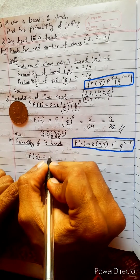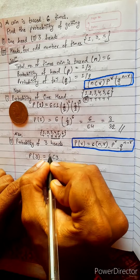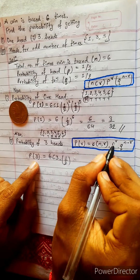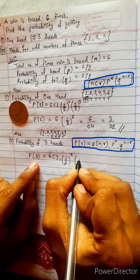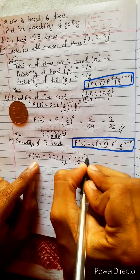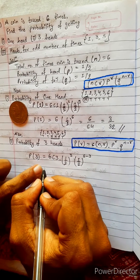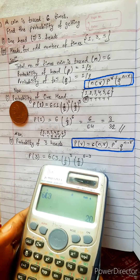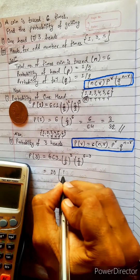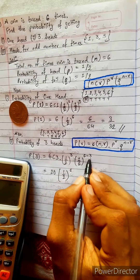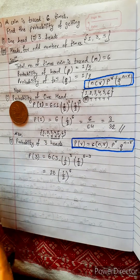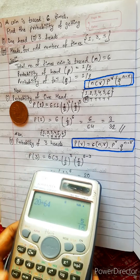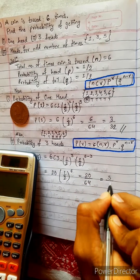P(3) is: N C R — that is 6 C 3 — where R means three. P means one by two, power R, where R means always three. Q means also one by two, power N minus R, which is six minus three. So 6 C 3 is twenty. Twenty into one by two, power three plus three equals six, and two power six is sixty-four. This gives twenty by sixty-four, which equals five by sixteen.